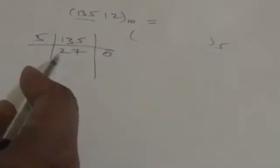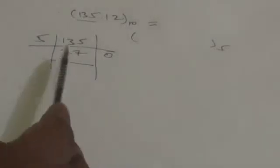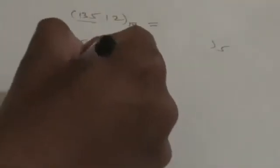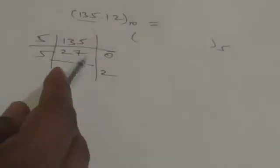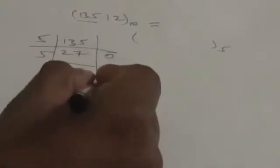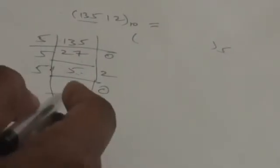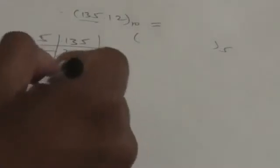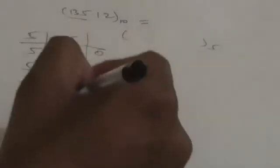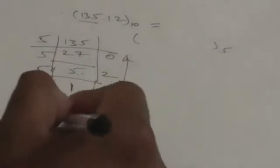135 divided by 5 gives quotient 27 and remainder 0. Again divide quotient 27 by 5: quotient 5, remainder 2. Again divide 5 by 5: quotient 1, remainder 0. Again divide 1 by 5: quotient 0, remainder 1. Accumulating the remainders from bottom to top gives 1, 0, 2, 0. So 135 in base 5 is 1020.